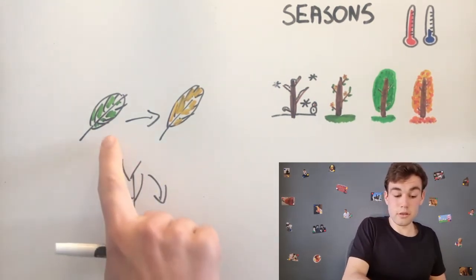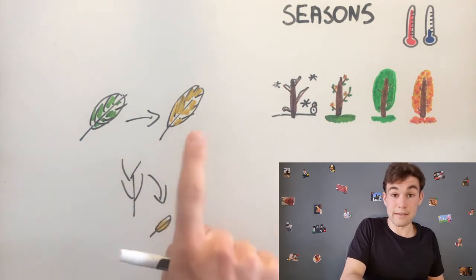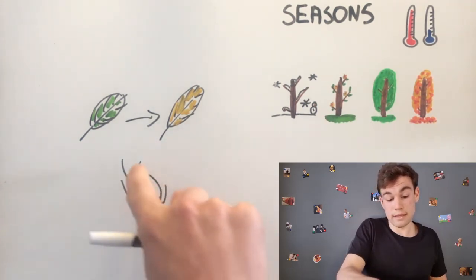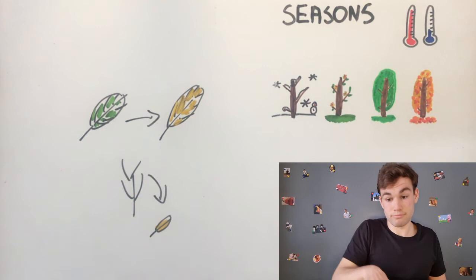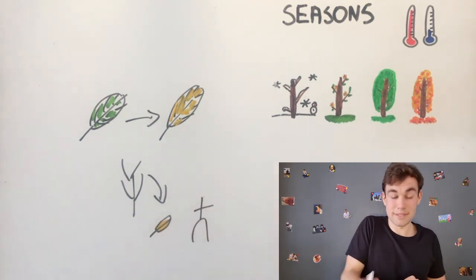First, they turn yellow and then they fall off and die.